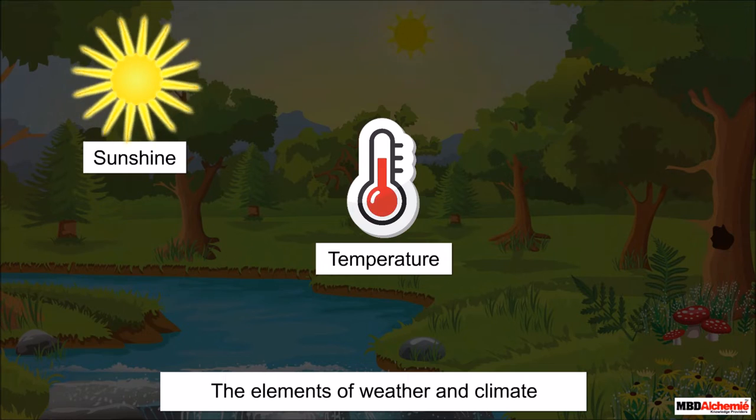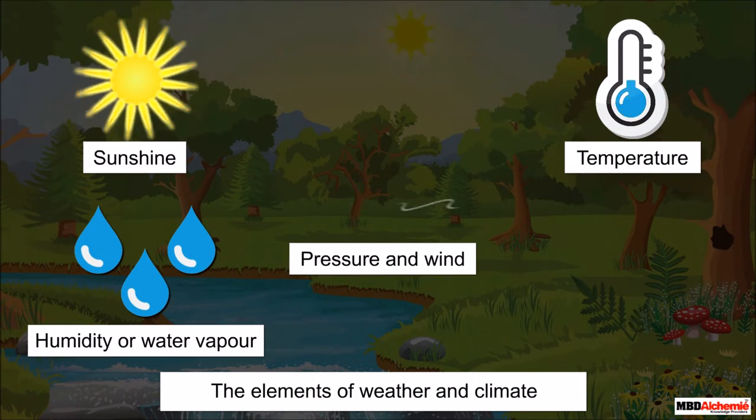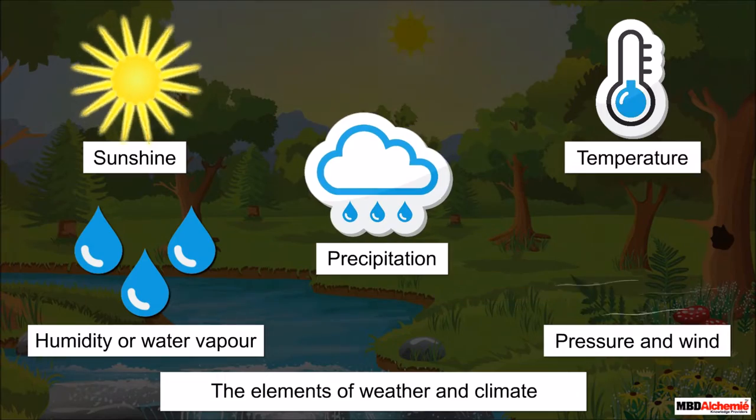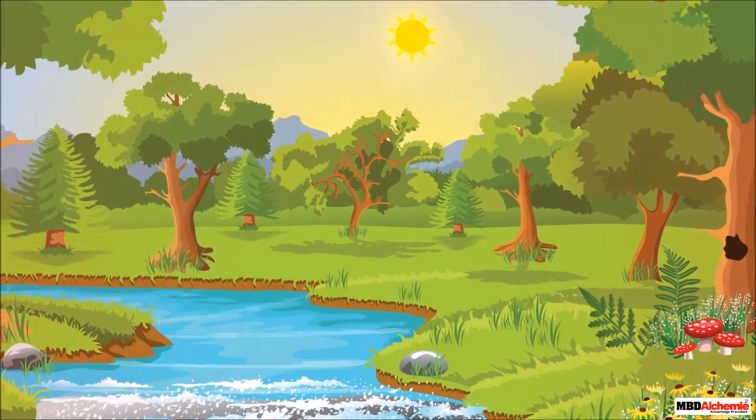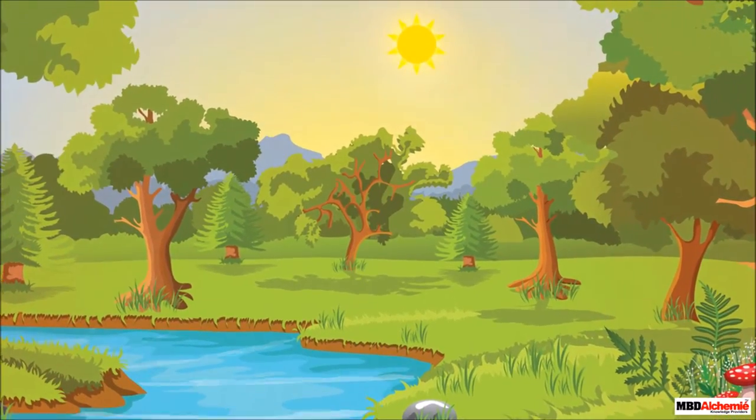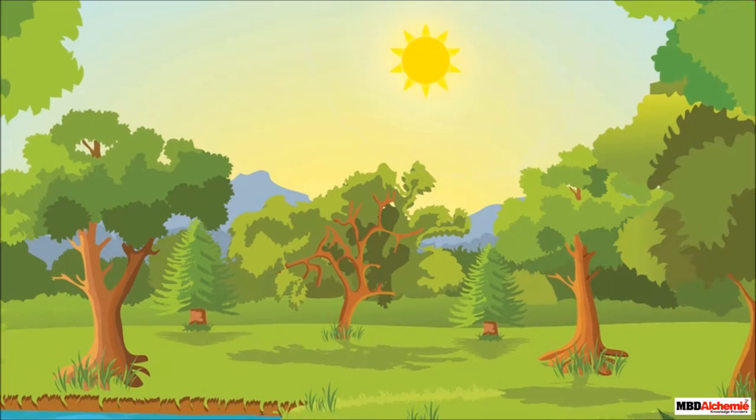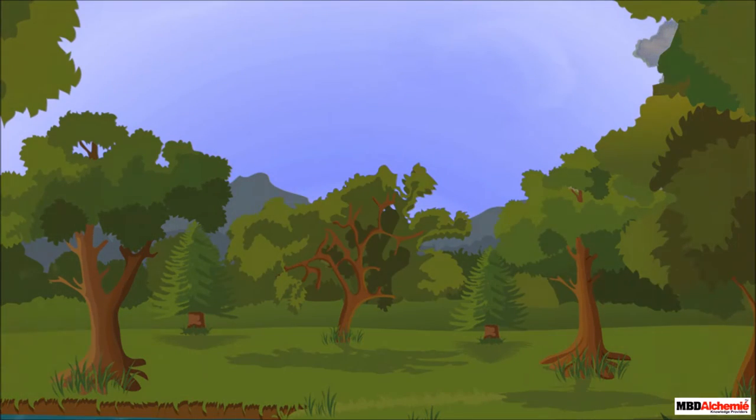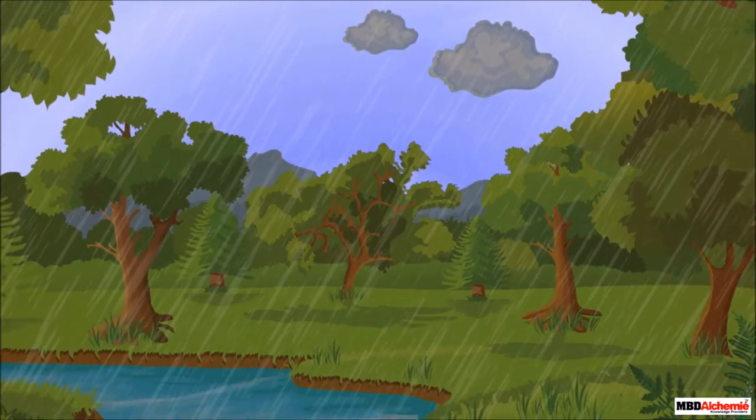Now let us discuss the elements of weather and climate. The elements are same for both. These are sunshine, temperature, humidity of water vapor, pressure, wind, and precipitation. We often notice that the weather conditions fluctuate during the daytime even with a little change in the sky condition. Clear bright sky can turn into a cloudy sky and make a day gloomy.